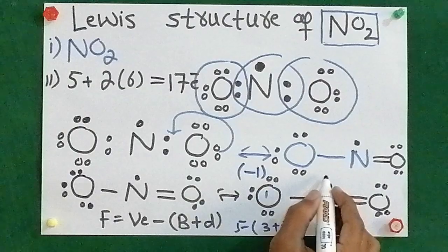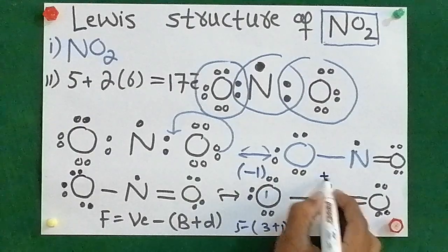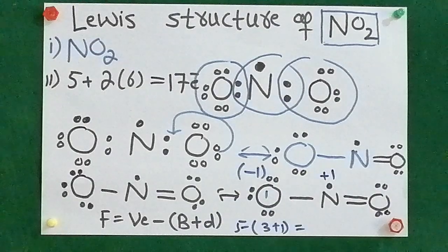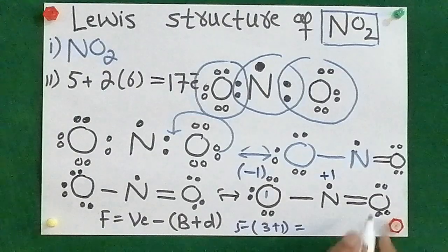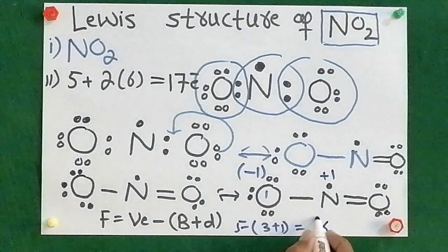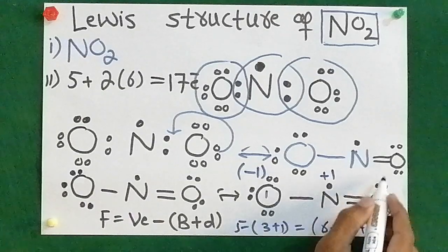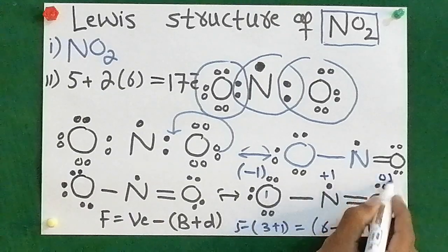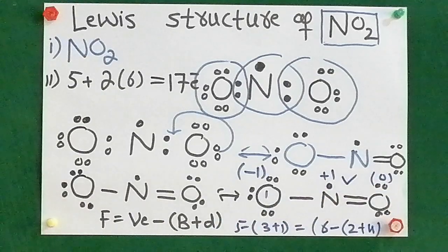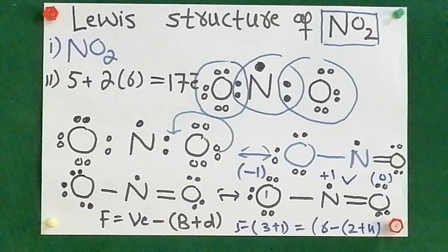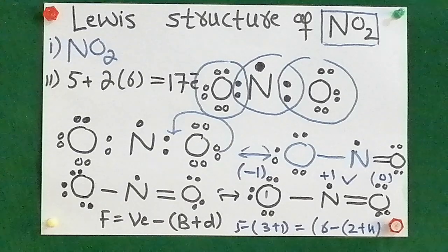The charge on nitrogen is going to be five minus four plus one, which equals plus one. For this oxygen: six valence electrons, minus two bonds, plus four dots — the charge is zero. So students, this structure is the best Lewis structure for nitrogen dioxide.